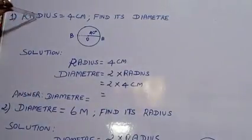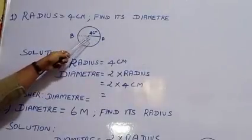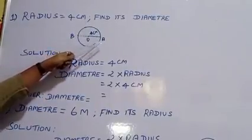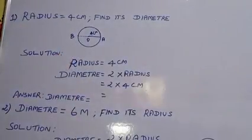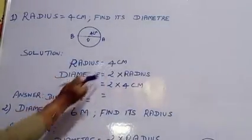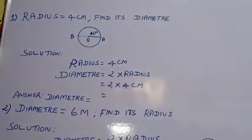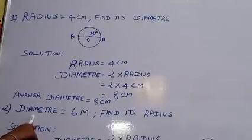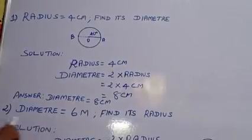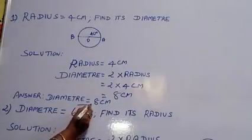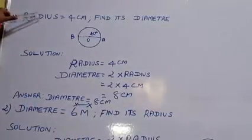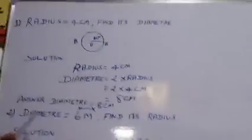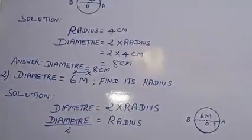Dear children, the first problem: radius is equal to 4 cm. The centre is O and OA is the radius. Find its diameter. Diameter equals 2 times radius. How much is the radius? 4 cm. So 2 times 4 cm is 8 cm. So the diameter is equal to 8 cm.